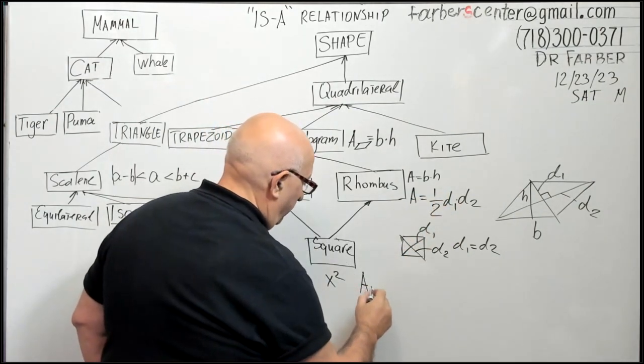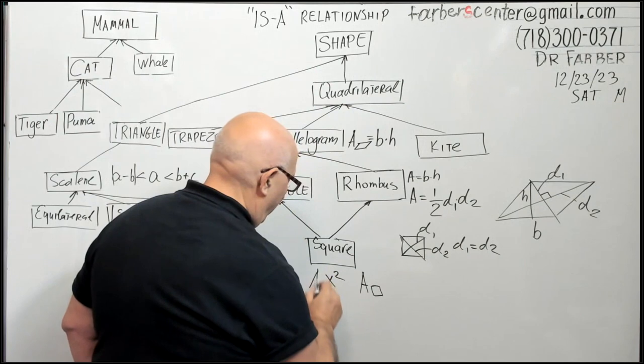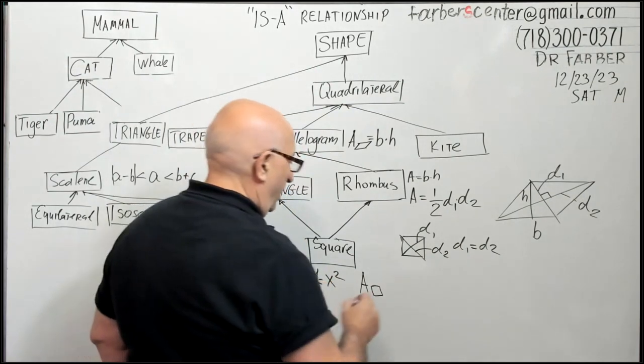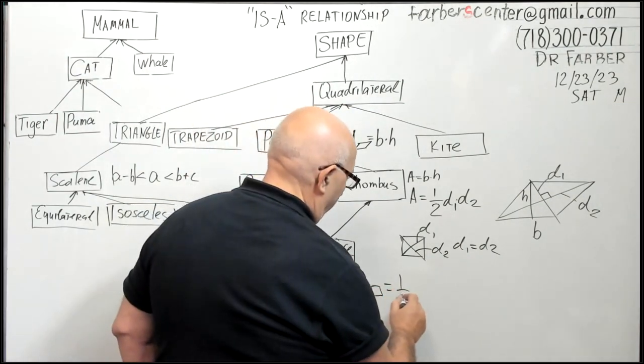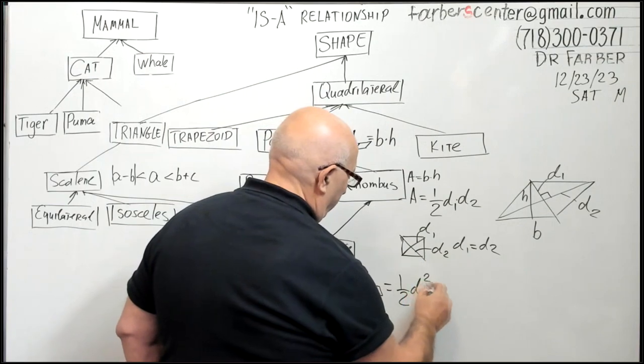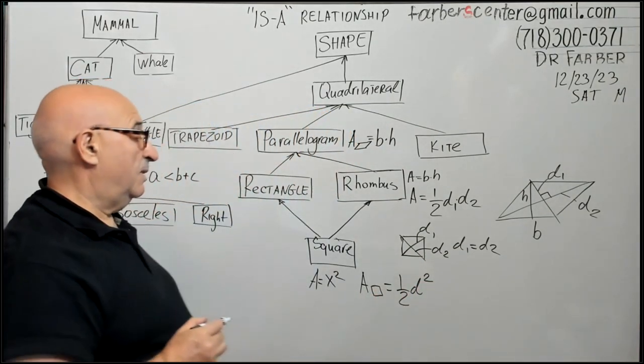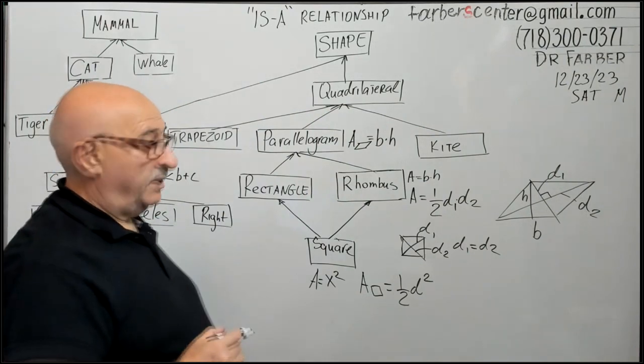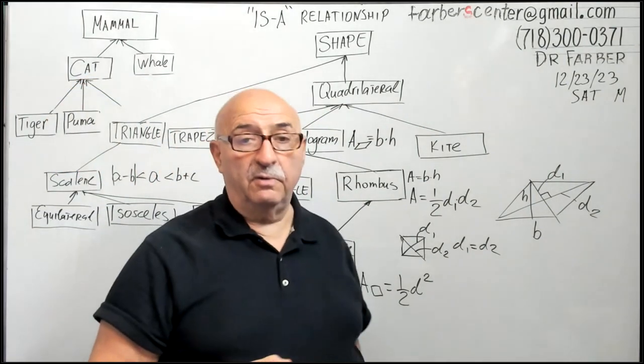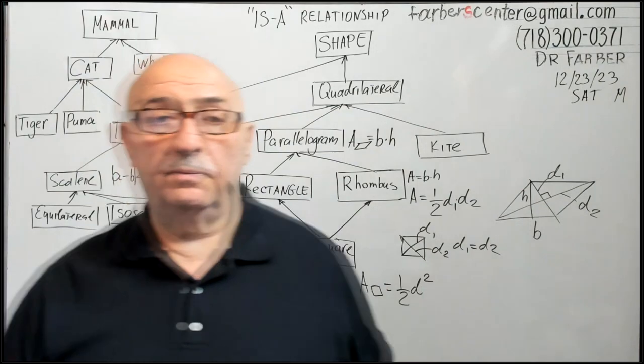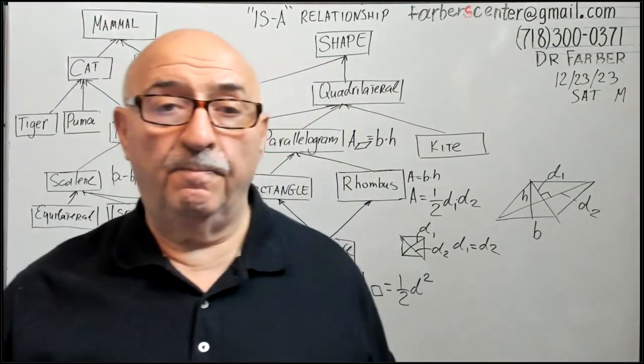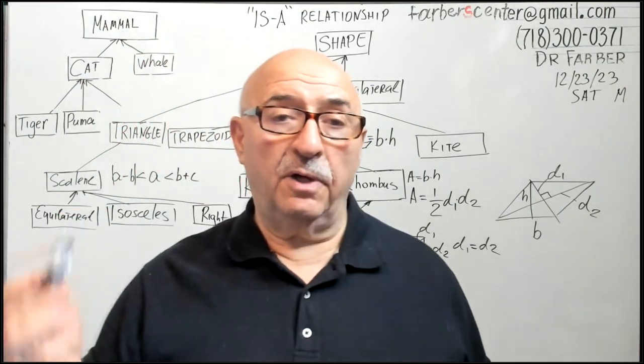If you plug in over there, area of square, this one formula equals one over two, or d to the second. So now if you have a square and let's say diagonal equals to 10, what is the area? 10 to the second, 100 divided by 2 is 50.